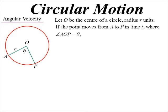So we're moving from A to P, but when it does that, it sweeps out an angle at the centre. That angle, let's call it theta.